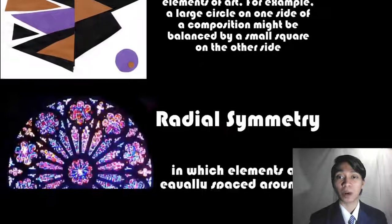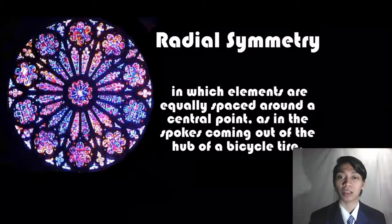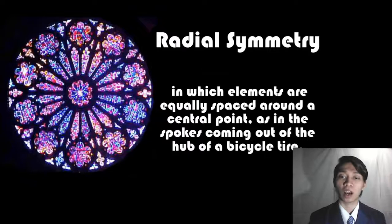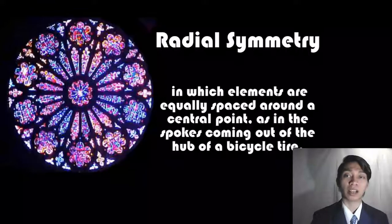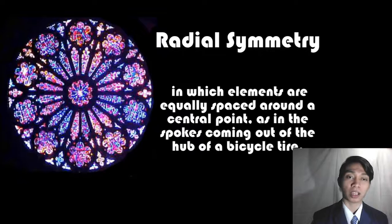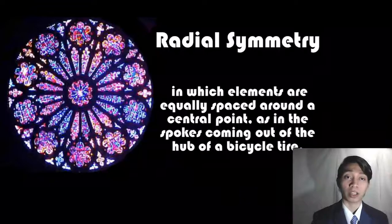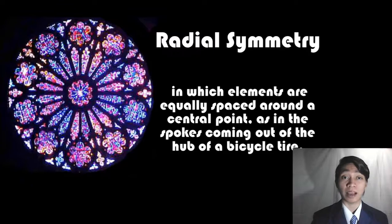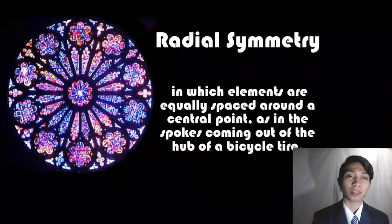Now we go on to radical symmetry, where the elements are equally spaced around a central point, as in the spokes coming from the hub of a bicycle tire. As you can see on this picture, this is a stained glass in a church that shows a central point in the middle, with different artworks arranged around the circle in a balanced form. That's what you call radical symmetry.